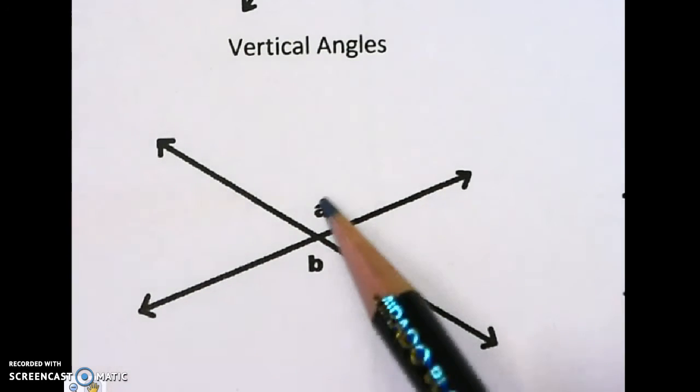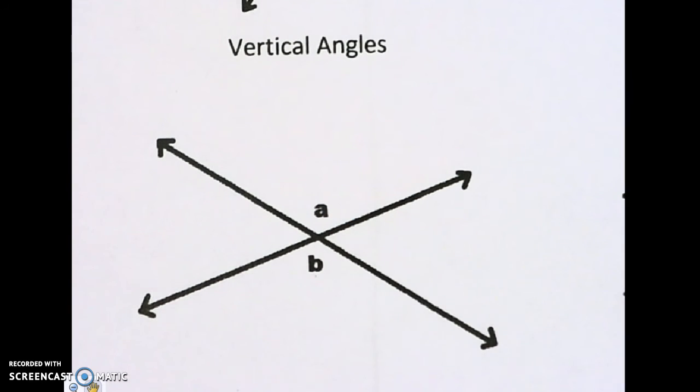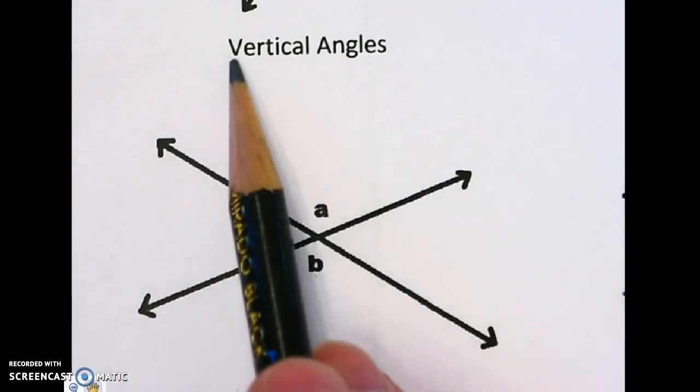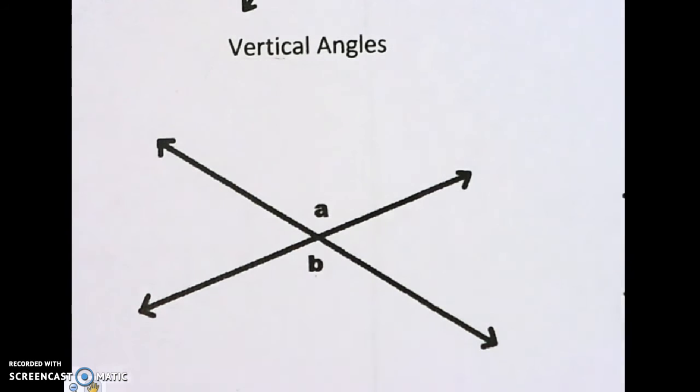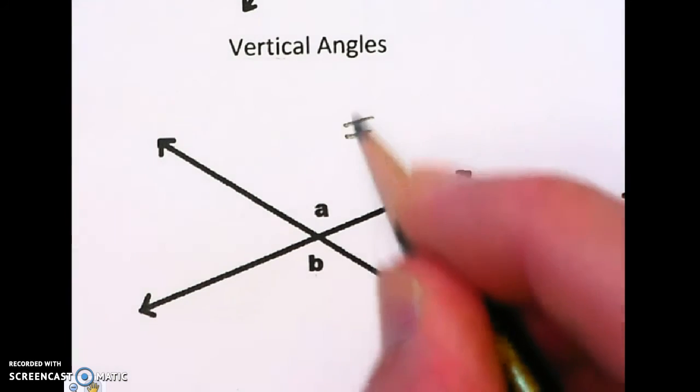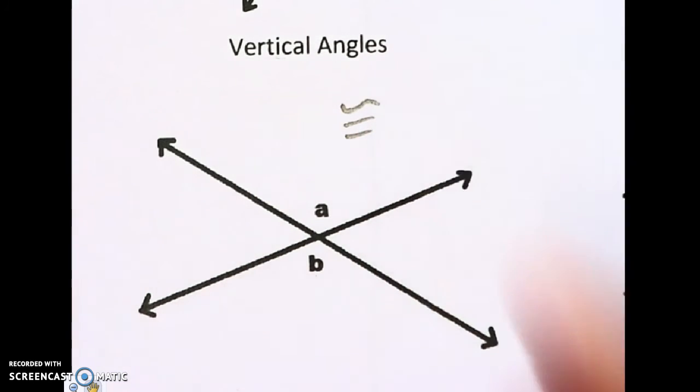Vertical angles are any angles that are in an X, and they're opposite of each other. I really wish the name of that was opposite angles, and they are congruent. So an equal sign with a squiggly.